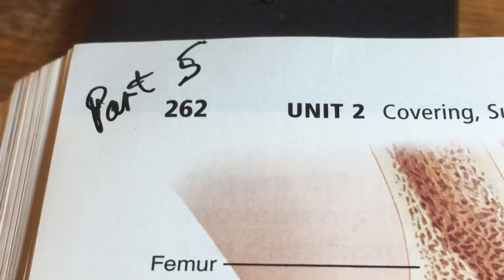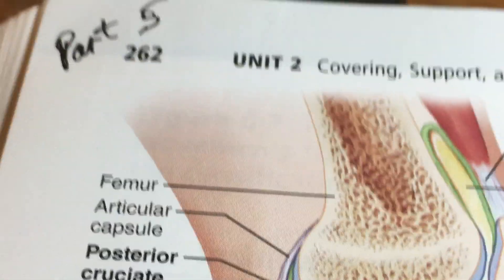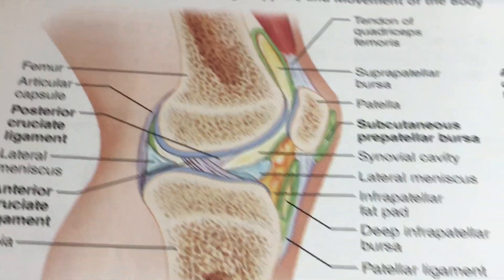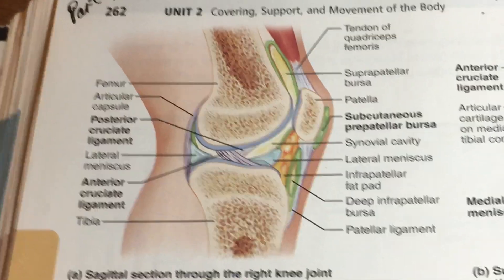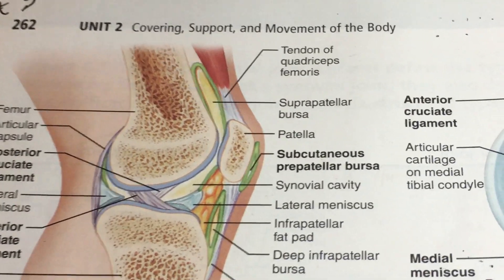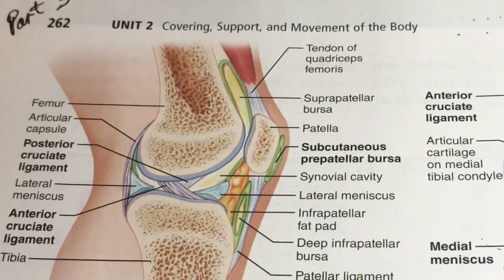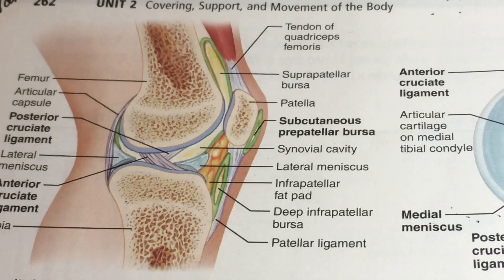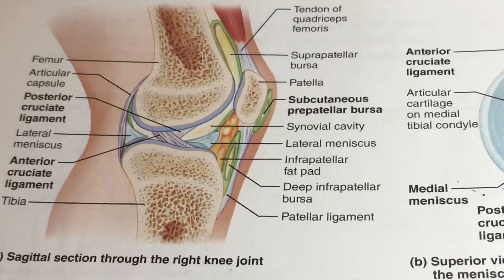It's Part 5, page 262, and we're still on joints. In this case we're looking at specific joints of interest. Possibly the single most commonly considered joint in clinical work would be the knee. There are a lot of people with knee issues, which is not a big surprise.